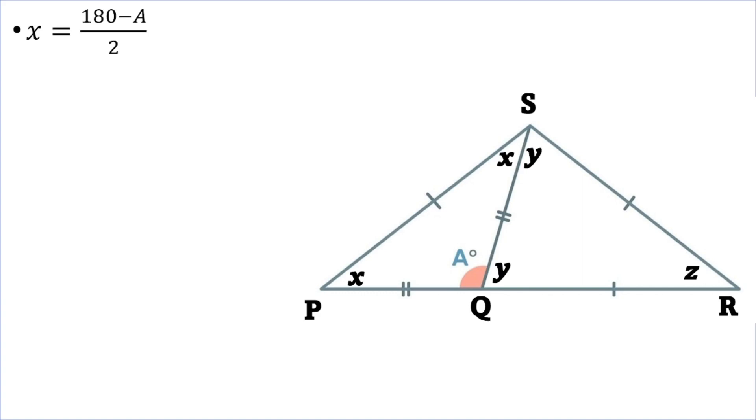Similarly, because the triangle SPR is isosceles, since SP is equal to SR, then X and Z are the two base angles of that triangle, which means that angle X will be equal to angle Z. So I can also conclude that Z is equal to 180 minus A divided by 2.